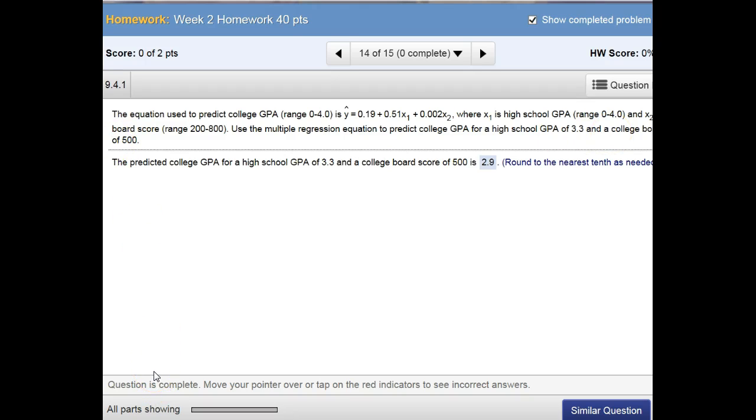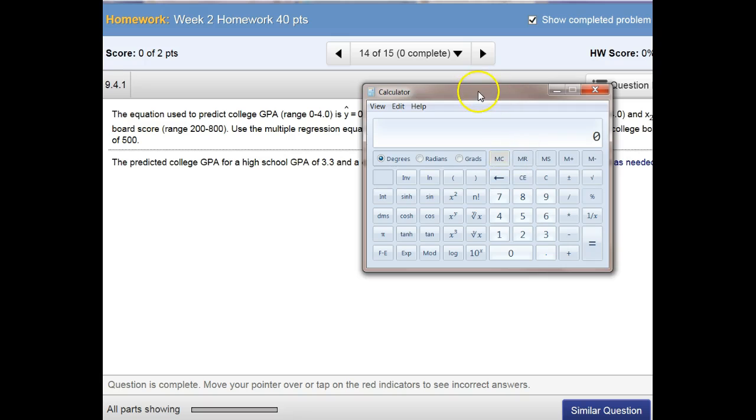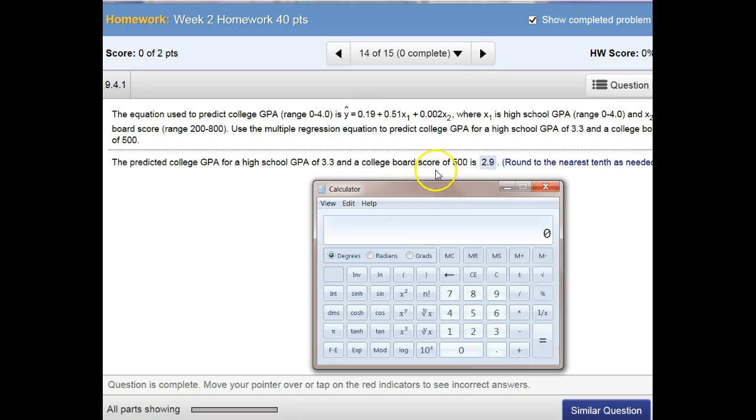You can use a calculator. Let's see if I can pull my calculator up here. Here it is. So my equation is 0.19 plus 0.15 times... Where's my times right here? Let's see. What was the high school GPA? 3.3.